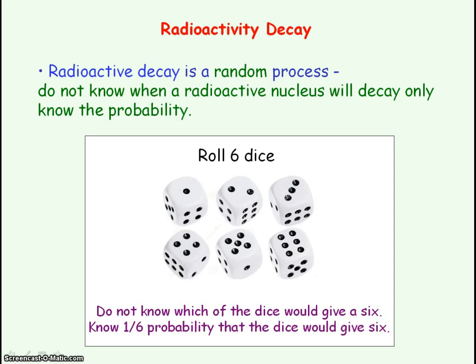So if we had six radioactive nuclei, we would not know when each of the nuclei will decay, but we would know the probability of each nucleus decaying in a given time.